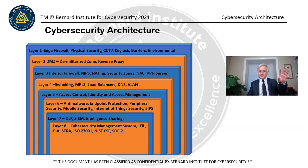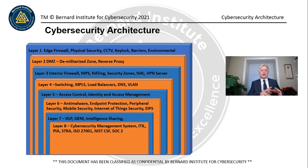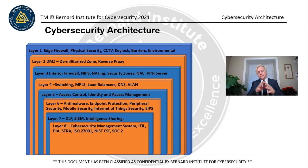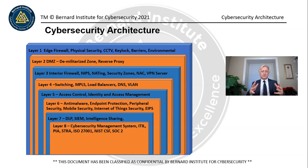SOC 2 has two parts. The first is an attestation where an external party reviews the controls around information handling, specifically around financial data such as your general ledger or finance system. The second part focuses on controls around the actual financial system — for instance, procedures for writing checks, reconciling accounts, suspense accounts, and purchasing or receiving accounts.